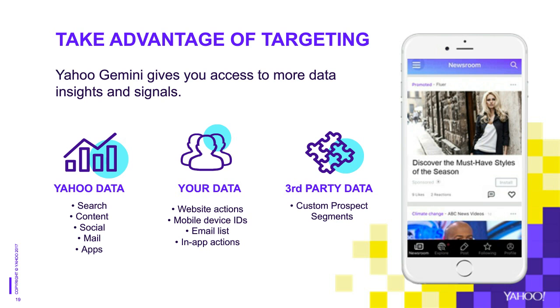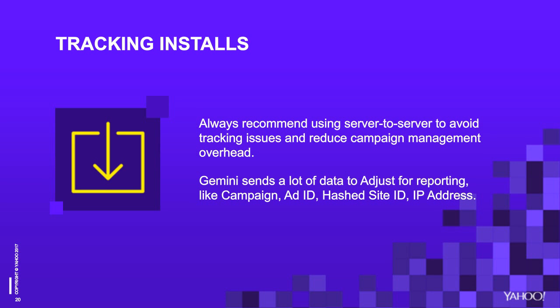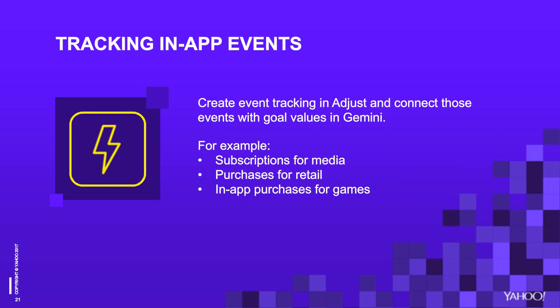One of the many benefits of using Adjust is to track installs. We always recommend using server-to-server over click-tracking URLs because it's easier to manage and reduces campaign overhead. It also makes delivery more efficient, since we won't show an ad to a user who already installed the app, even from a different network. Gemini also sends over a dozen data points back to Adjust, so you can report on campaign information, hashed site ID, and IP address. Gemini also offers the ability to track those critical in-app events, and since Adjust is an integrated partner of ours, it's an easy way to ensure your campaigns are delivering deeper funnel KPIs — whether your goal is to drive sign-ups, subscriptions, free trials, or first purchases, event tracking is a sure way to measure your goals.